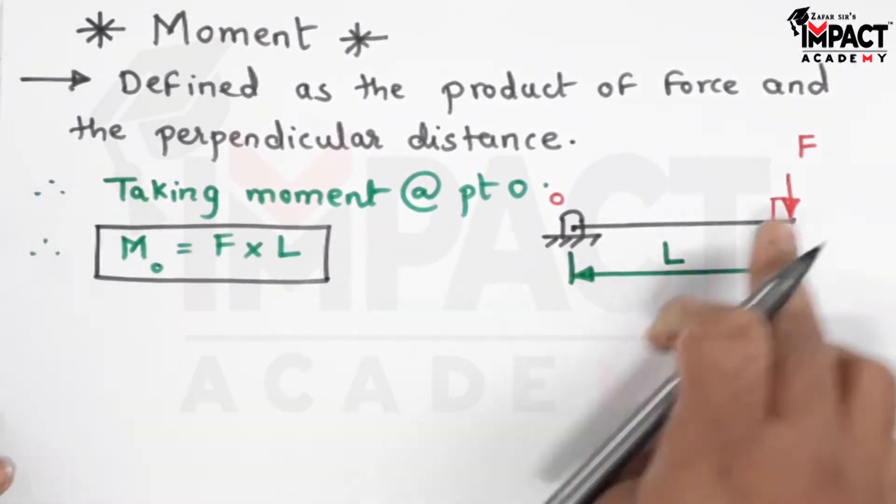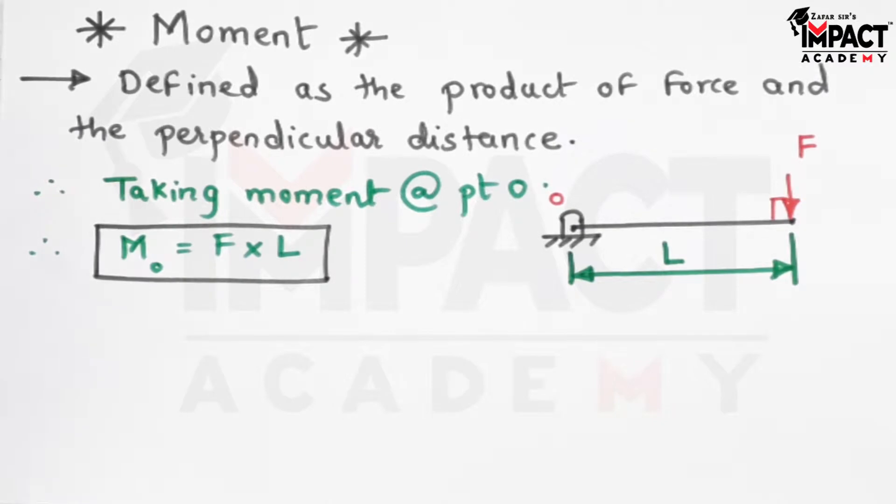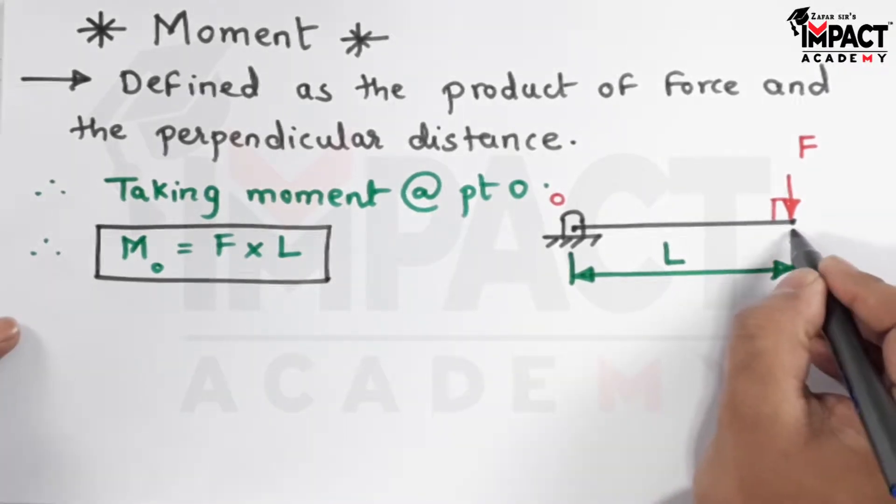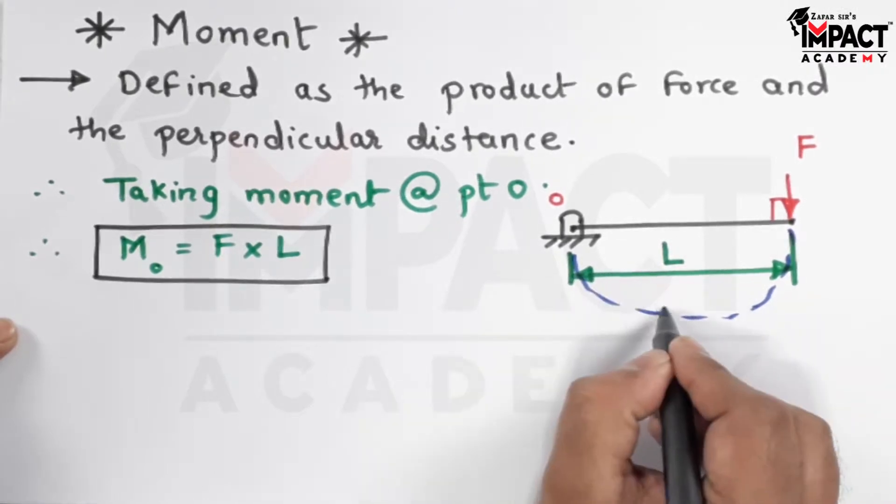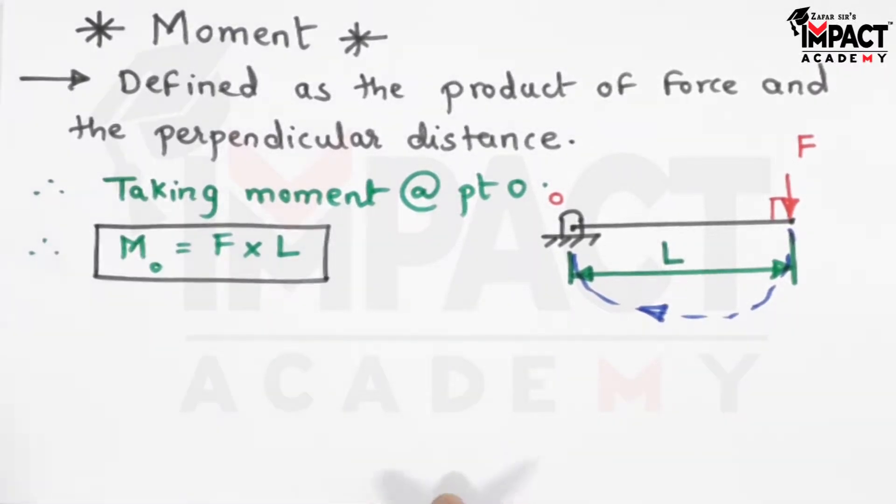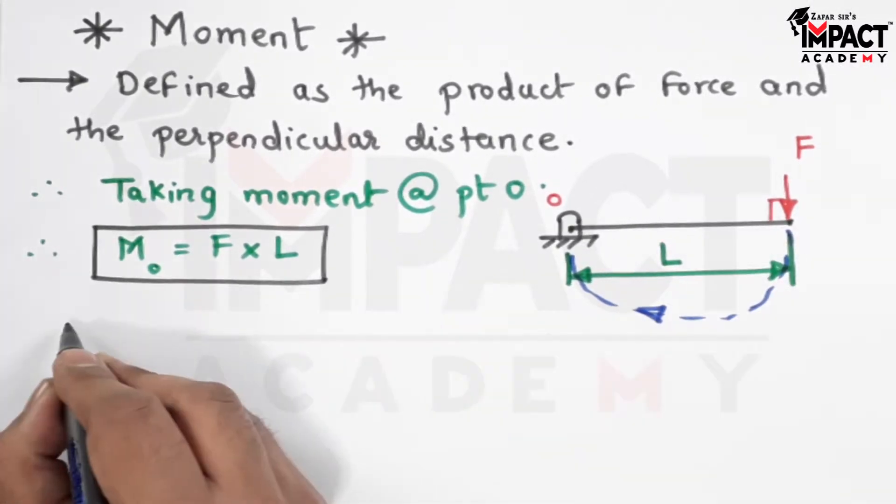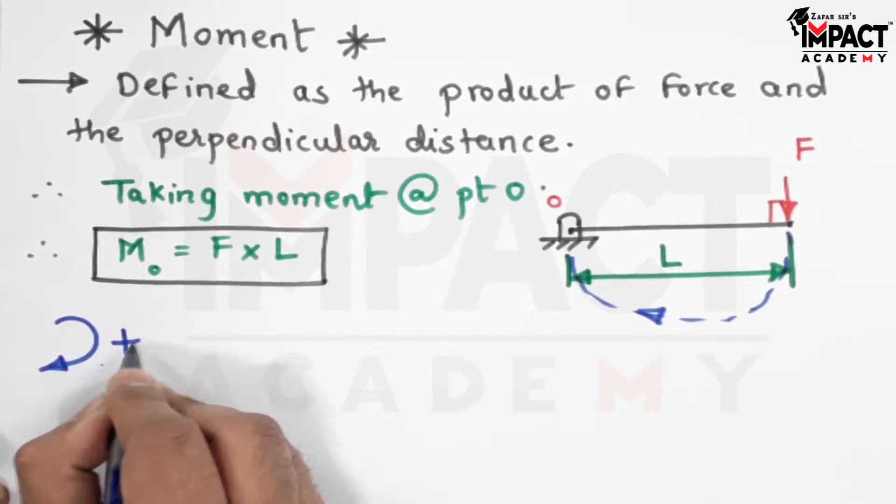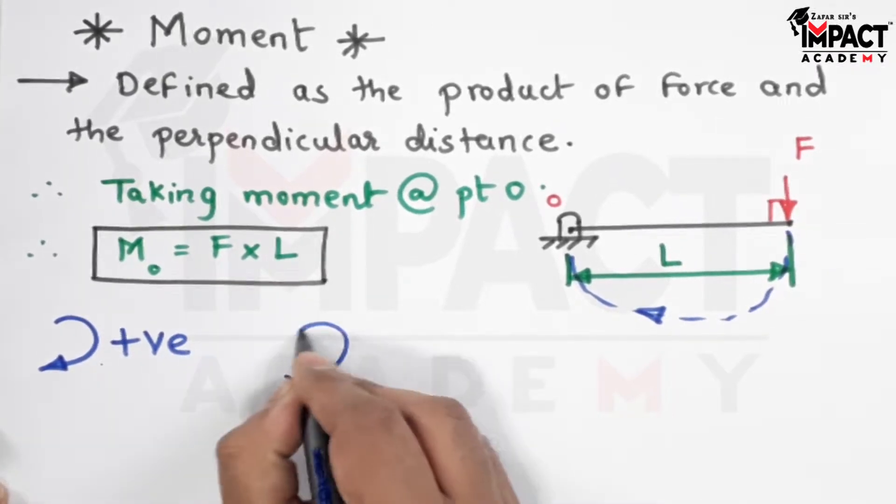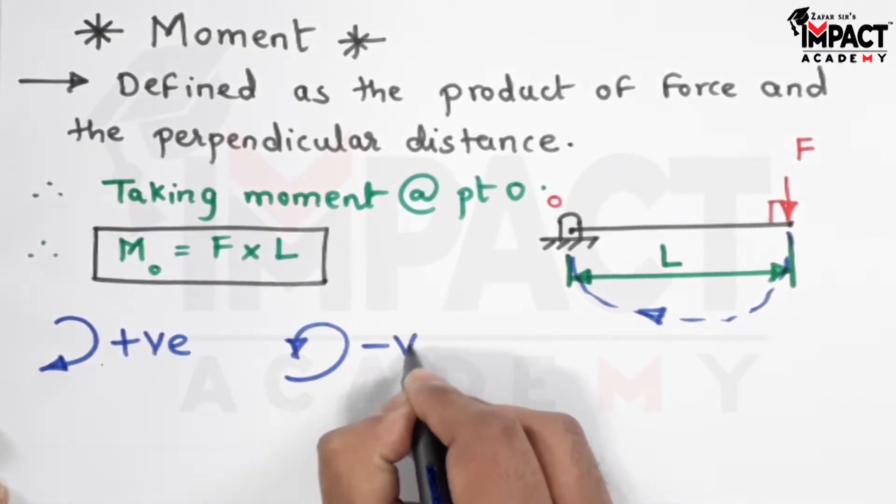The effect of this moment would be to produce a clockwise rotation on this lever. As per the convention, we can say in mechanics that we are going to take clockwise moment as positive and anti-clockwise moments as negative.